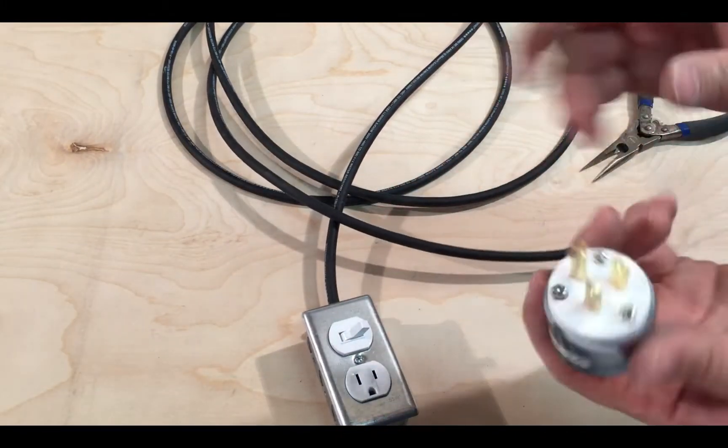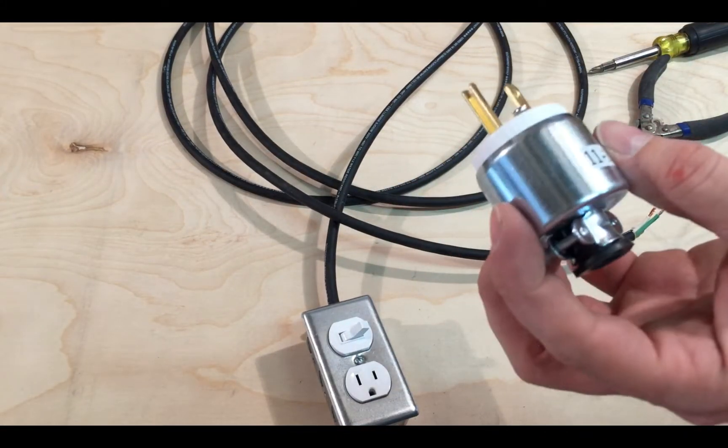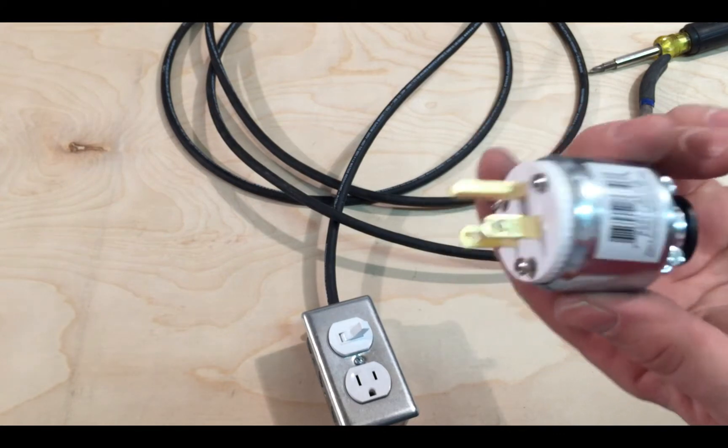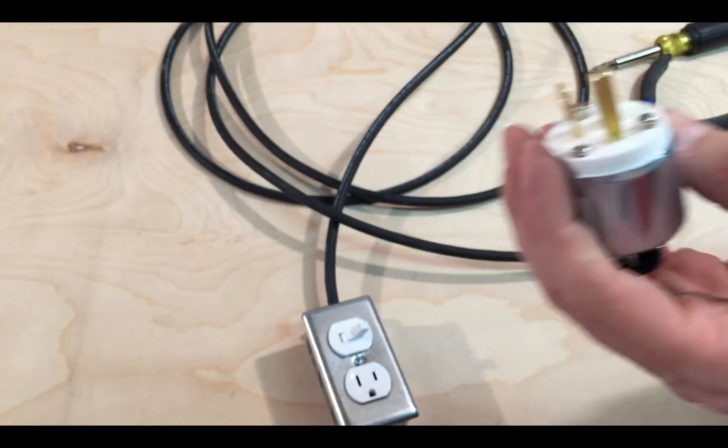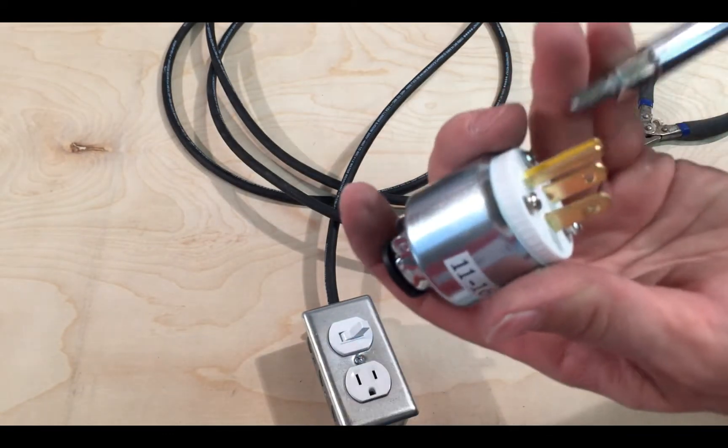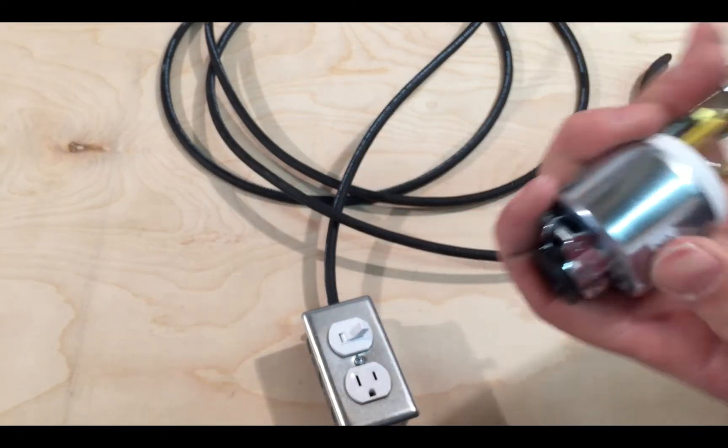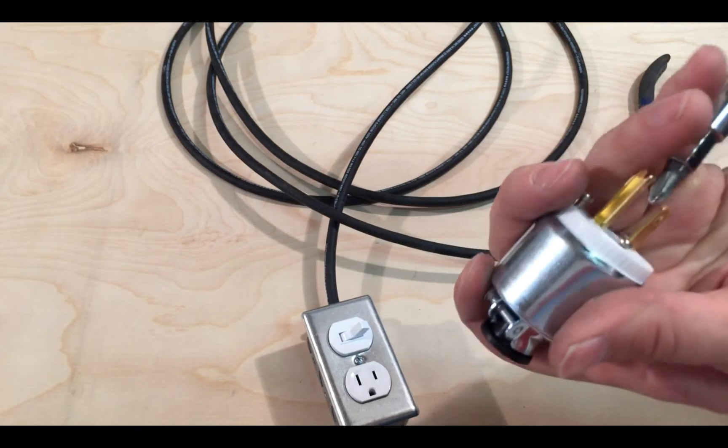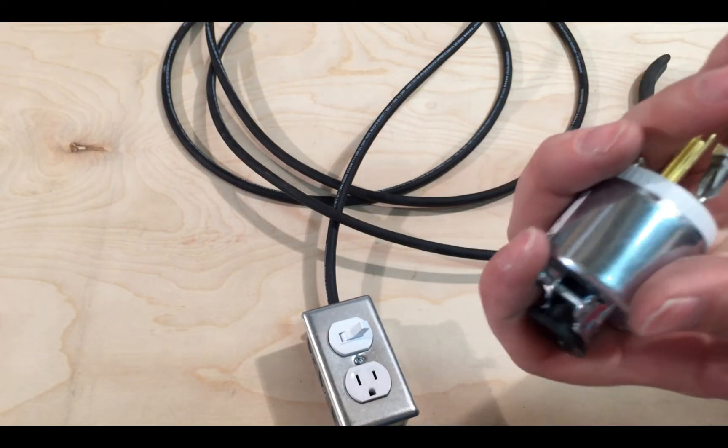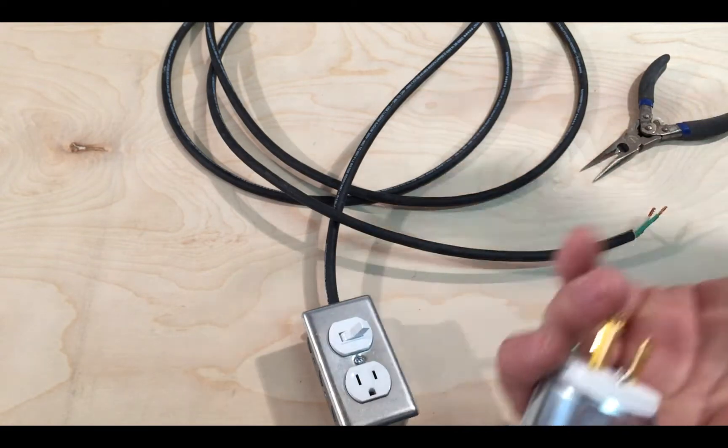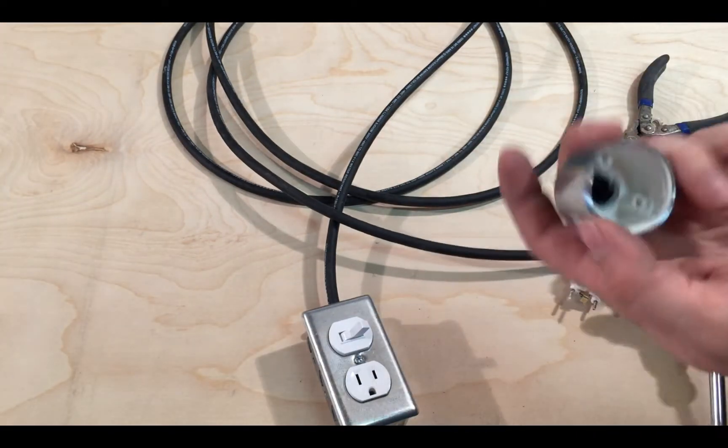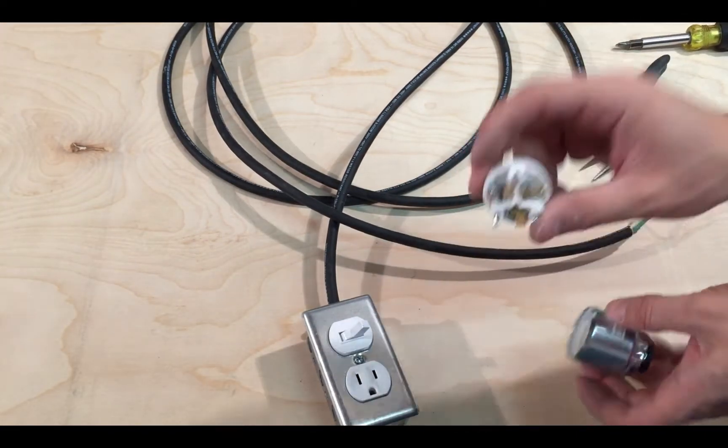Now we're gonna do the end. This is the cheapest end that I can find because I didn't want to spend a whole bunch of money. Unfortunately, there's a lot of pieces to this cheap thing, but it'll work. So let's undo this part, the front. All right, here's the pieces.